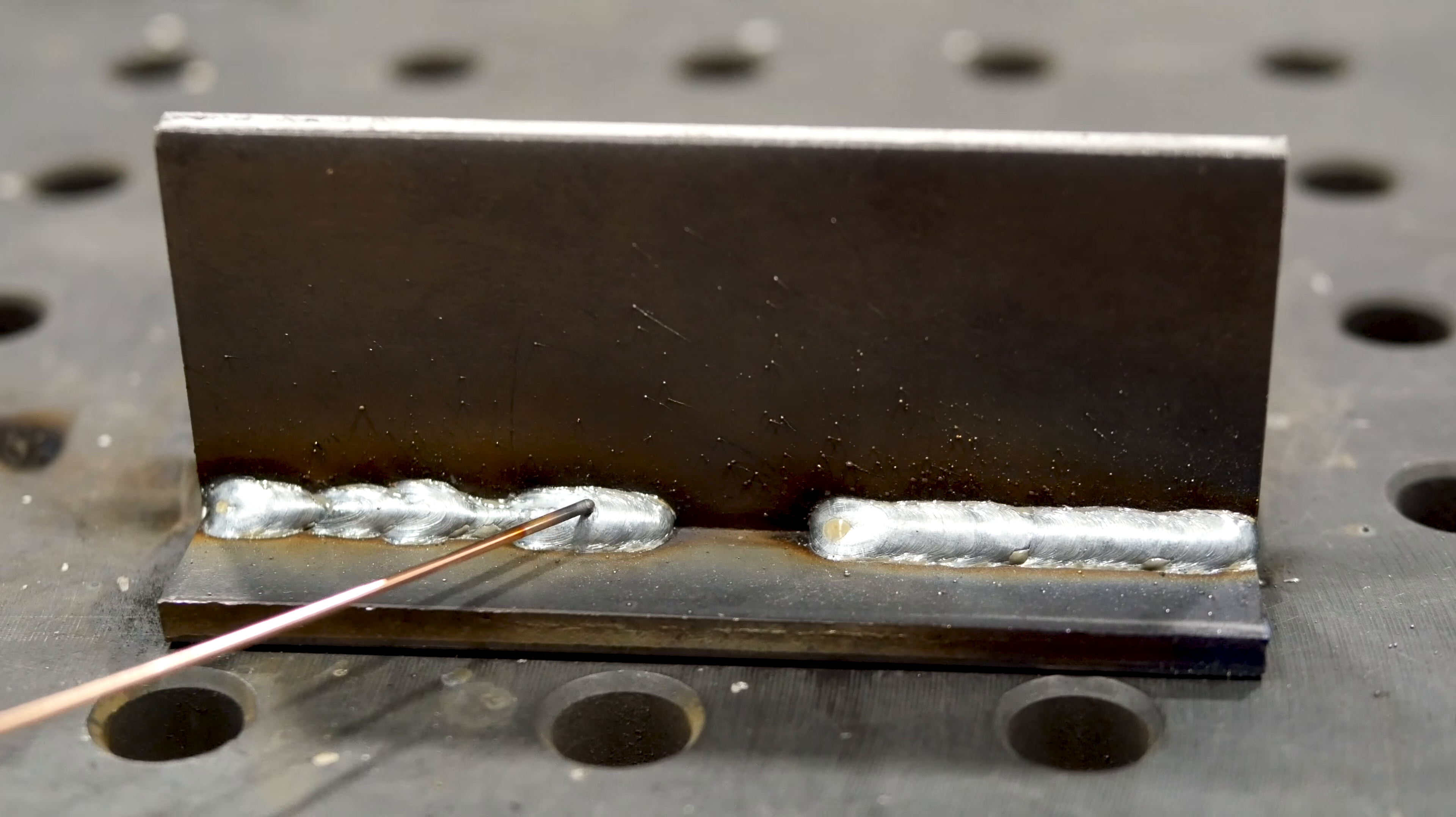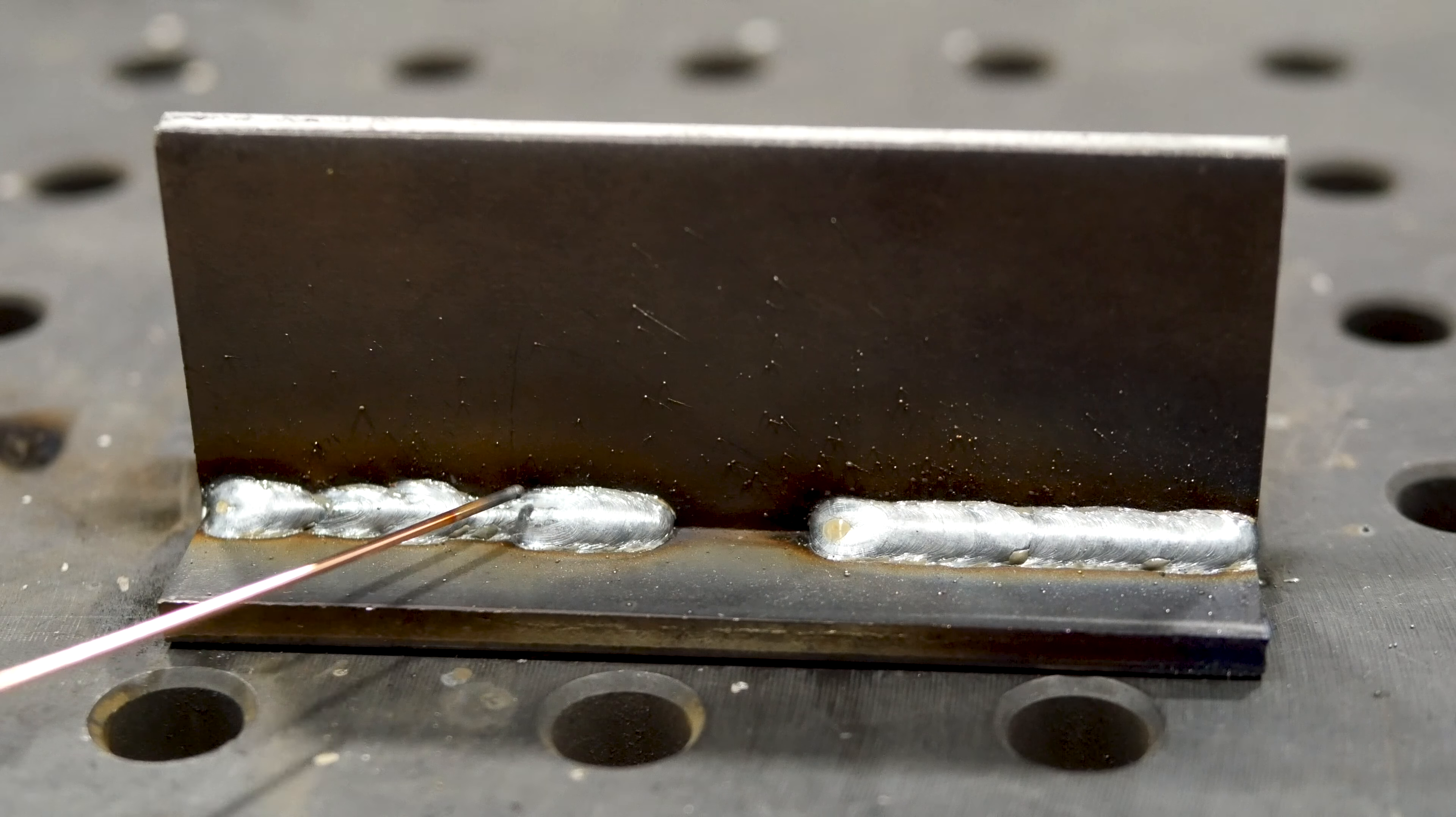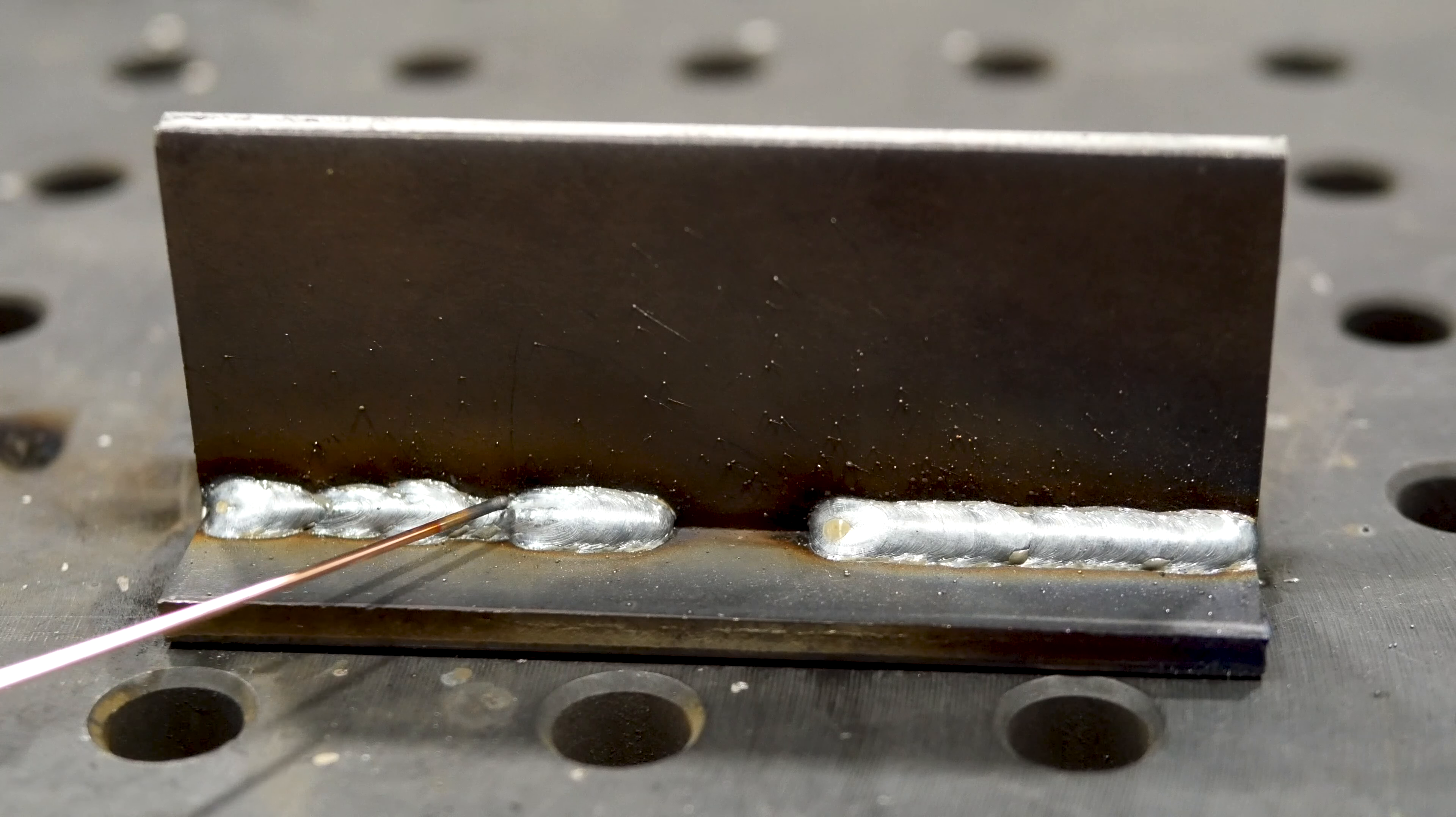This is caused by irregular travel speeds. If you move your gun too fast, the size of your weld is going to suffer.